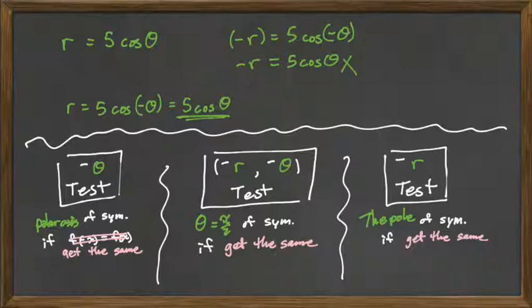The next one, or the last one, negative r equals 5 cosine theta. That's the same thing that we ended up with over here. So this one also fails. So we only have symmetry about the polar axis for that function.